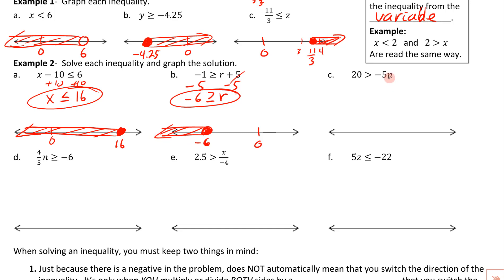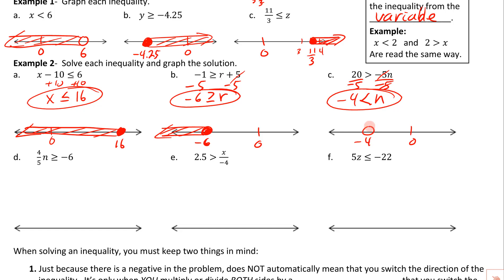Next: get n by itself by undoing multiplication by negative 5 — divide by negative 5. Those cancel. Now, when we divide by a negative, we have to switch the direction of the inequality. The second I know I'm dividing or multiplying both sides by a negative, I switch the direction. We get n and negative 4. Graph: put 0 and negative 4, leave the circle open, read from the variable — n is greater than negative 4, so shade to the right.